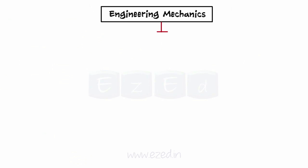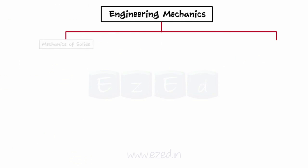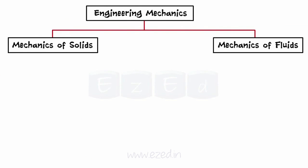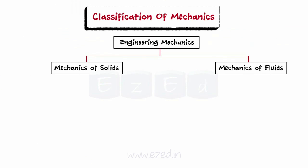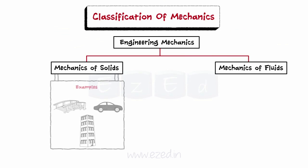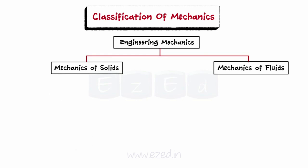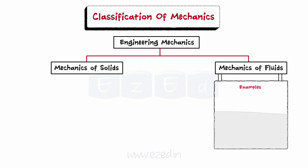Classification of mechanics: Mechanics is divided into two main parts — mechanics of solids and mechanics of fluids. Mechanics dealing with behavior of solids is called solid mechanics. Examples of solid mechanics are buildings, bridges, cars, etc. The study of motion and forces on fluids, that is both liquids and gases, is termed as fluid mechanics. Examples of fluid mechanics are air coming out from the air conditioner, waves in water, etc.